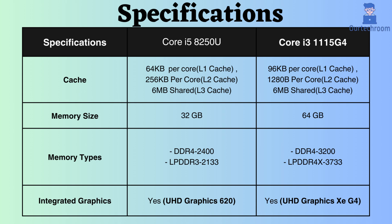Moreover, memory support differs between the Core i5-8250U and the Core i3-1115G4. The former supports up to 32 GB of memory, whereas the latter supports up to 64 GB. Both CPUs support DDR4 RAM. However, the Core i3 supports LPDDR4 RAM, while the Core i5-8250U supports LPDDR3. Additionally, the Core i3 supports higher frequency RAM.